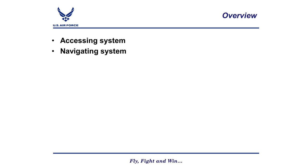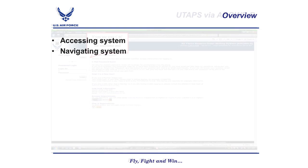We will go over how to access and navigate the system. These slides have been taken directly out of the UTAPS Web help file, which is located on the main toolbar once you have logged into UTAPS. Throughout this presentation, you will see the words 'click the next button to proceed.' That is meant for the help file presentation — when you are doing these steps for yourself, there will be no next button.